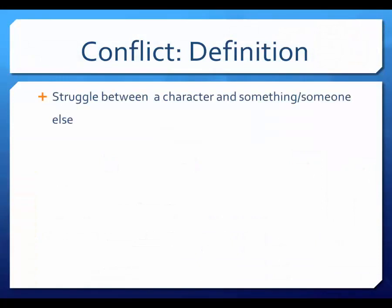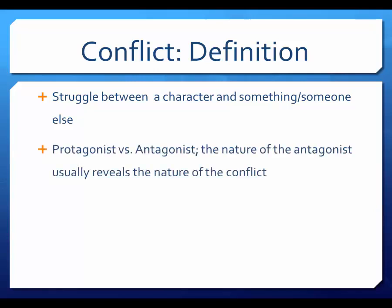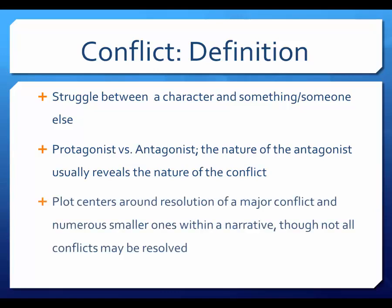Conflict, in literature, involves a struggle between two opposing forces, usually a protagonist who is trying to achieve some goal and the antagonist who works against completion of that goal. The nature of the antagonist often sets up the nature of the conflict. There are four basic sources of conflict. Most story plots are designed around the resolution of a major conflict in the narrative, though there are often sub-conflicts that may or may not be resolved, leading to additional tensions within a story.